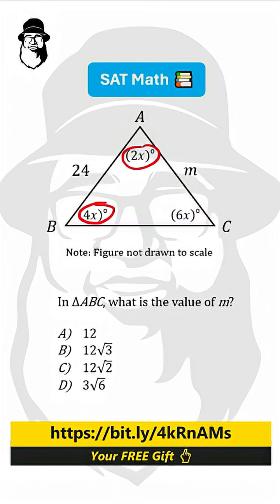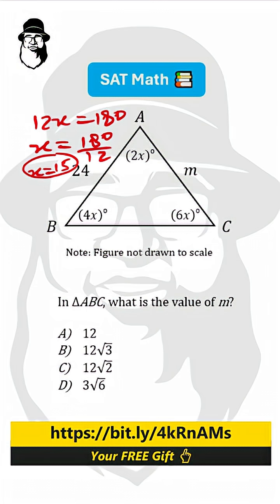So we have 2 plus 4, that is 6, plus this 6 is 12x. 12x is 180 degrees, and if we divide both sides by 12, we have 180 divided by 12. We can do it on a calculator. SAT allows it on this section, so it will be 15. Now we know x is 15.